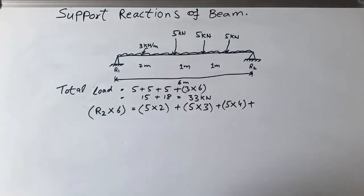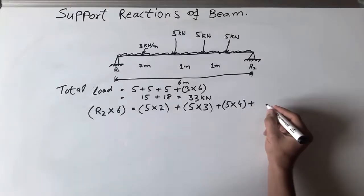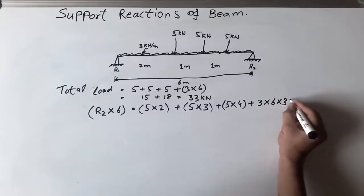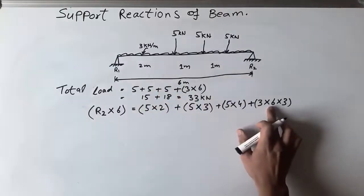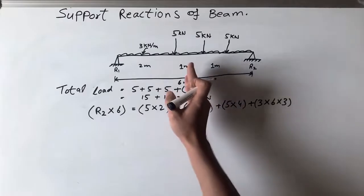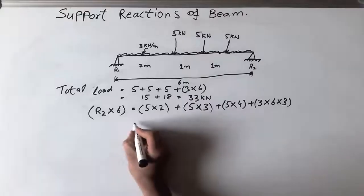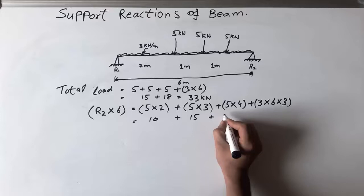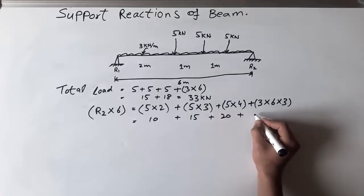Now for the UDL: it is 3 multiplied by 6 multiplied by 3. Here, 3 kN/m is the intensity, 6 is the beam length, and this last 3 is the half-length of the beam, because the UDL always acts at its midpoint. So this gives us 10 plus 15 plus 20 plus 54.